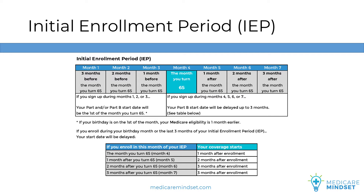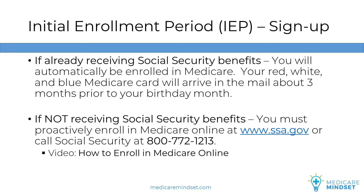One final item to note: if your birthday is on the first of the month, you'll be eligible one month sooner. So a July 1st birthday will yield a June 1st Medicare eligibility date. To get enrolled in Medicare during your IEP, it depends on whether you're receiving Social Security benefits. If you're already receiving Social Security benefits, your red, white, and blue Medicare card will arrive about three months prior to your birthday month.